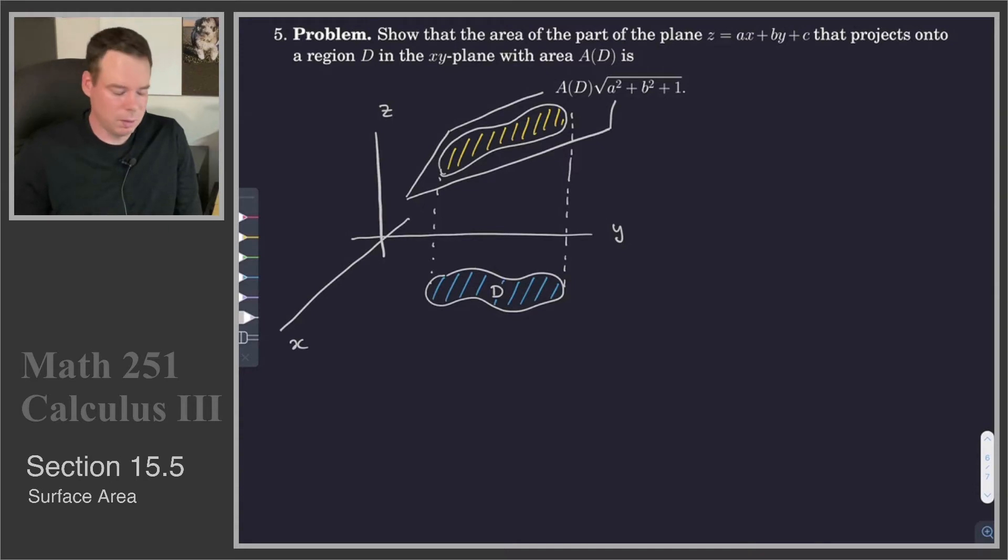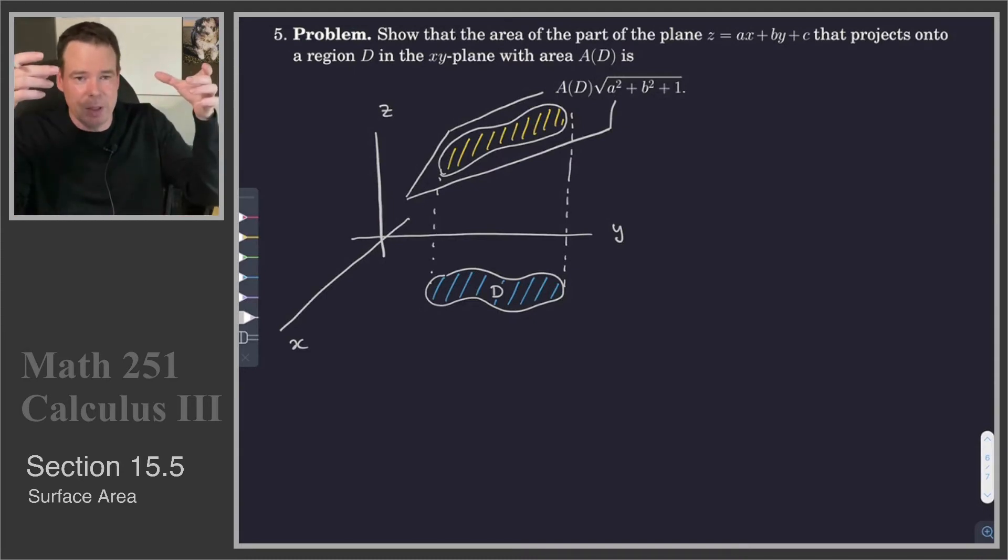And if you think about what happens here, should the area change? Yeah, absolutely it should, because the steeper I make this plane, this region D down below, it's going to get pushed up onto that plane and stretch out a really long distance along the plane. Whereas if the plane is just completely horizontal, then the projection of this region D up to the plane is just going to be the same as the region D. They'll be identical.